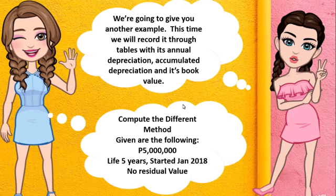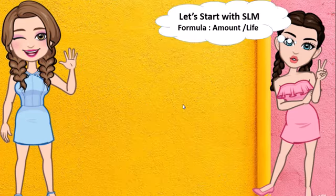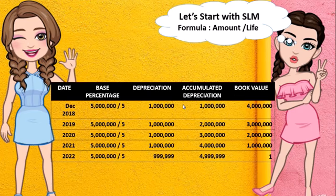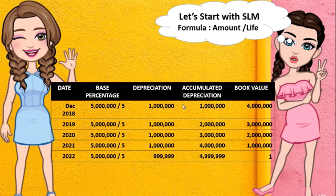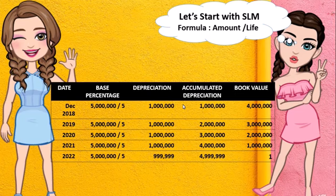We'll give another example using a table. For the Straight Line Method, the base amount is 5,000,000 over 5 years. The depreciation will be 1,000,000 per year — the same every year. Accumulated depreciation means you add the previous and present depreciation together to get your accumulated depreciation, and the difference gives you the annual book value. At the end of the period, you need to have at least 1 peso of remaining depreciable value.